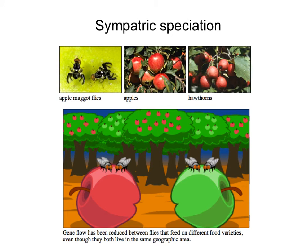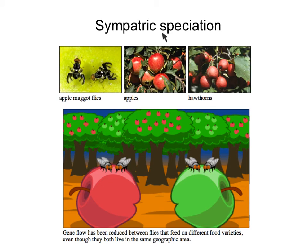Another example of sympatric speciation is the apple maggot fly. Originally, all these flies fed on hawthorns. But as apples began being grown in the area, some flies became specialized on living on apple trees. Apple trees and hawthorns produce fruits at different times, so the flies that specialized on apple trees shifted their breeding time to match apple fruit production, while flies on hawthorns kept their original breeding time. As a result, the apple-tree flies became a separate species — this is an example of temporal isolation driving sympatric speciation.